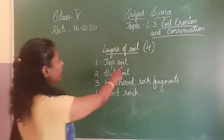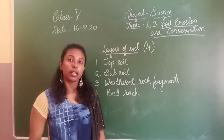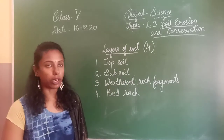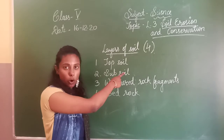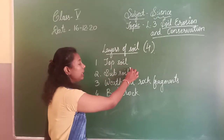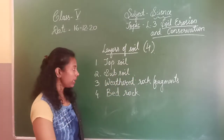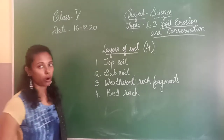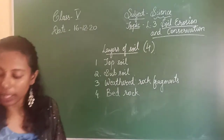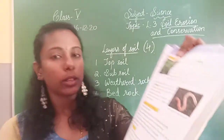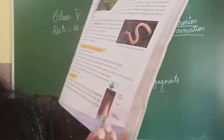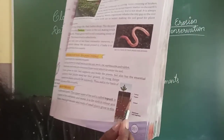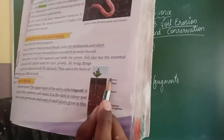Coming on to the next topic, that is layers of soil. There are totally four layers of soil. The first one is topsoil, next comes the subsoil, then comes the weathered rock fragments, and the last one is bedrock. Here in your textbook, page number 201, is the diagram for layers of soil. The topmost thin layer visible above the plant roots is the humus — the decaying organic matter.